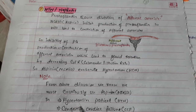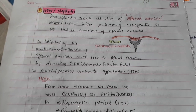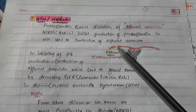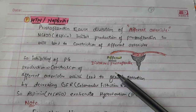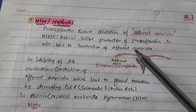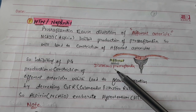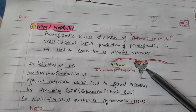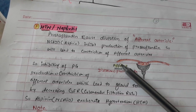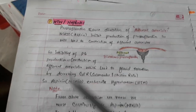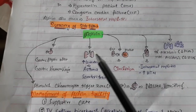Aspirin can also cause interstitial nephritis. Therefore, aspirin should be used cautiously in hypertensive patients and those with congestive cardiac failure, because aspirin inhibits prostaglandin production needed for afferent arteriole dilation. Constriction of the afferent arteriole decreases GFR and causes fluid retention, exacerbating hypertension.